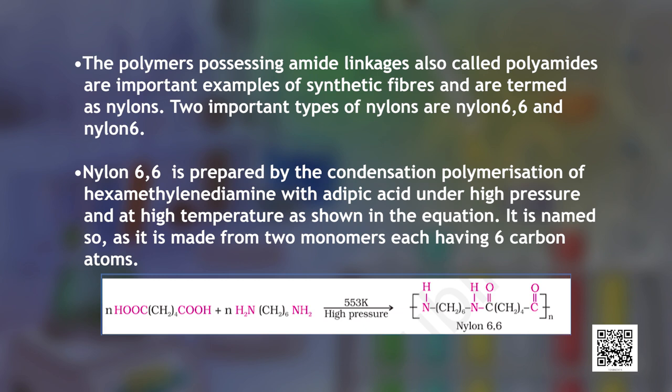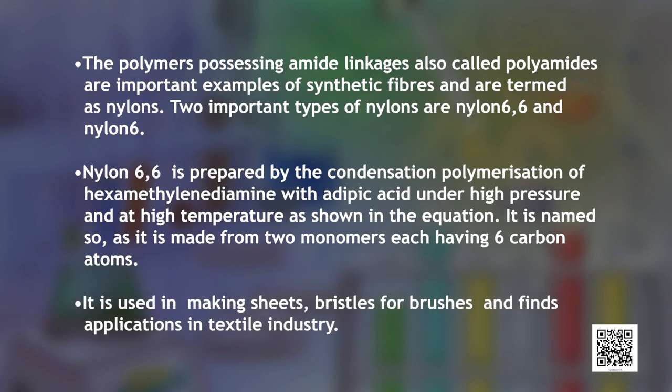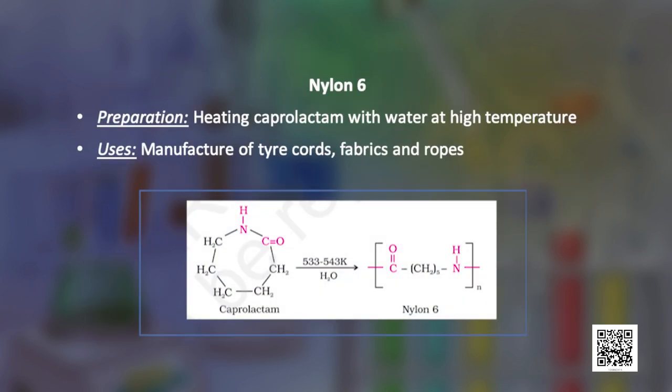Nylon-66 is prepared by the condensation polymerization of hexamethylenediamine with adipic acid under high pressure and high temperature, as shown in the equation. It is named so as it is made from two monomers each having six carbon atoms. The other type, nylon-6, is used in the manufacture of tire cords, fabrics and ropes. It is prepared by heating caprolactam with water at high temperatures as depicted in the equation.